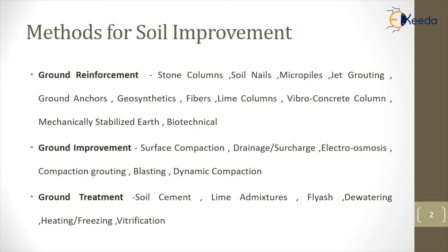The next technique is ground improvement by compaction or drainage — that is, dewatering the soil which is closer to the water body, or electro-osmosis, or blasting dynamic compaction. By all these methods we can alter or improve the soil property. Next is ground treatment, which includes inserting admixtures or catalysts into the soil such as lime, fly ash, cement, or waste materials. We can also treat the soil by heating it or freezing it.